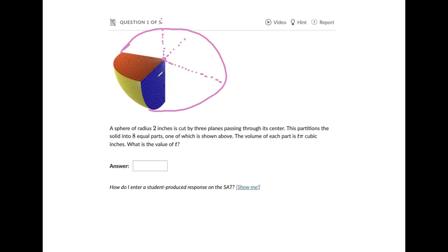I kind of gave you a preview there. So now it says the radius is two inches, so that means that is this distance here from here to here. And the next sentence says this partitions the solid into eight equal parts, one of which is shown above.